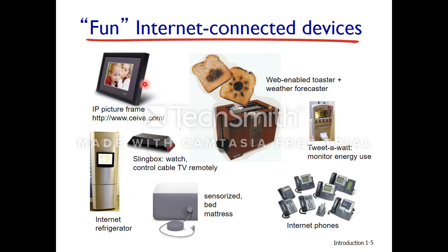Here are some examples of internet-connected devices. Over here we have a picture frame that just downloads pictures over the internet. Here is an internet refrigerator — not that far-fetched; I had actually seen a video from Microsoft where they envisioned a house of the future where your refrigerator would be able to email your weekly shopping list to your neighborhood grocery store. Here is a Slingbox where you can watch and control cable TV remotely. A bed mattress might have sensors — to know that grandma actually slept in bed, for example. Over here you have a web-enabled toaster where the day's weather forecast is burned onto your toast. You might have a device that monitors your energy usage, and you also have internet phones, which we sometimes use to interconnect various campuses.